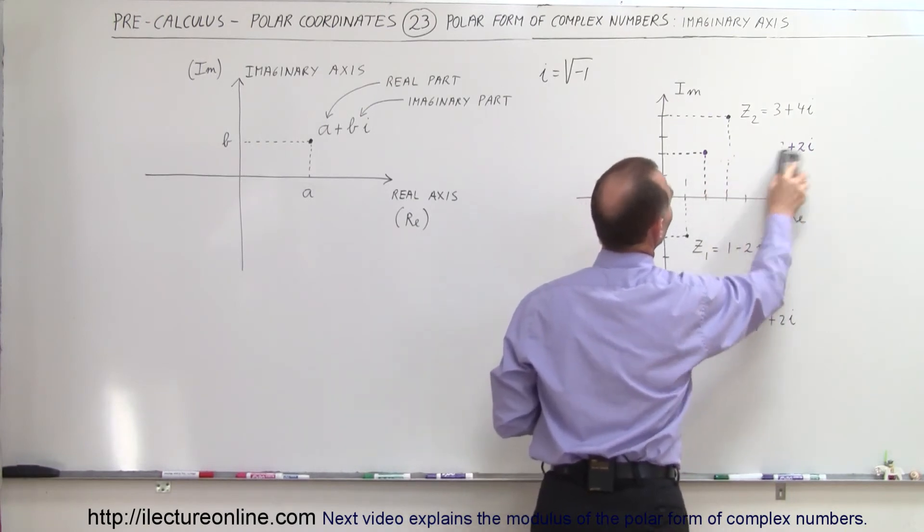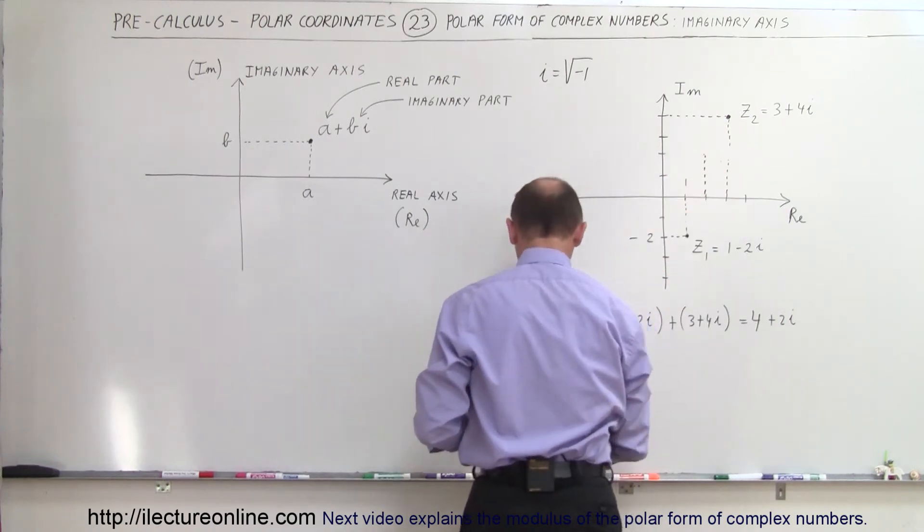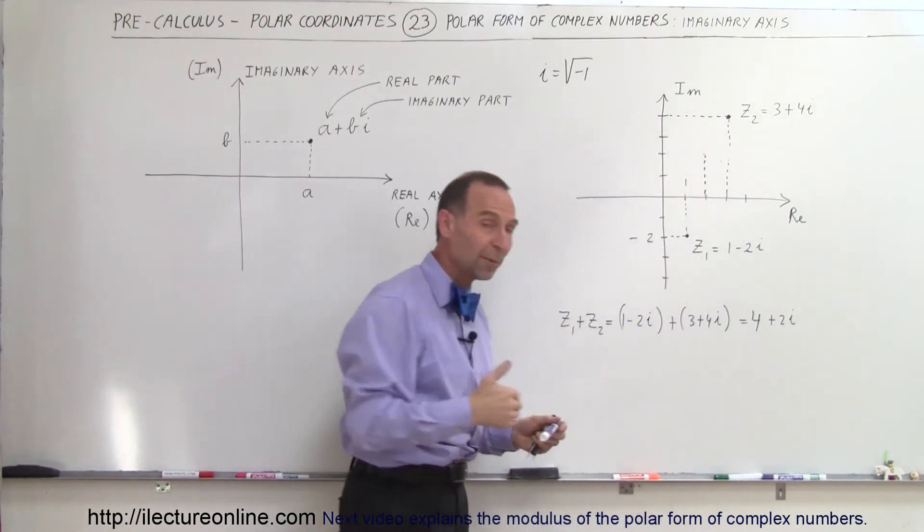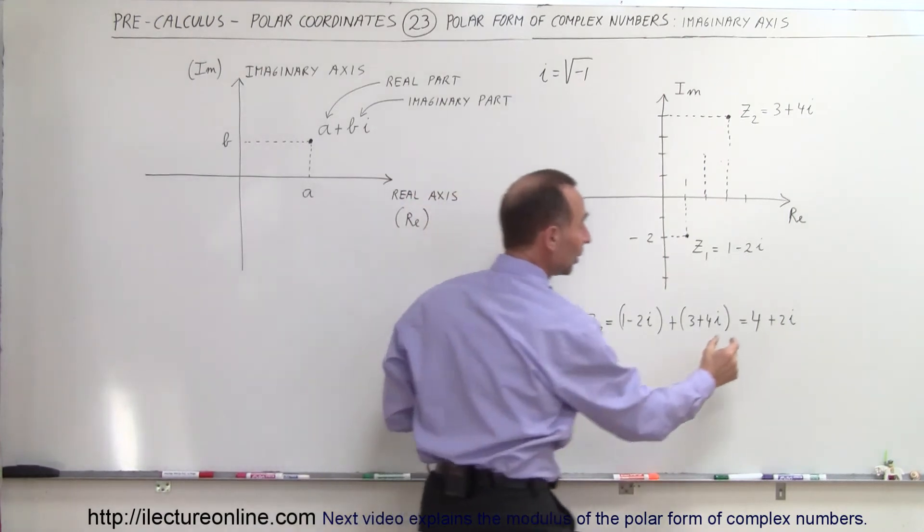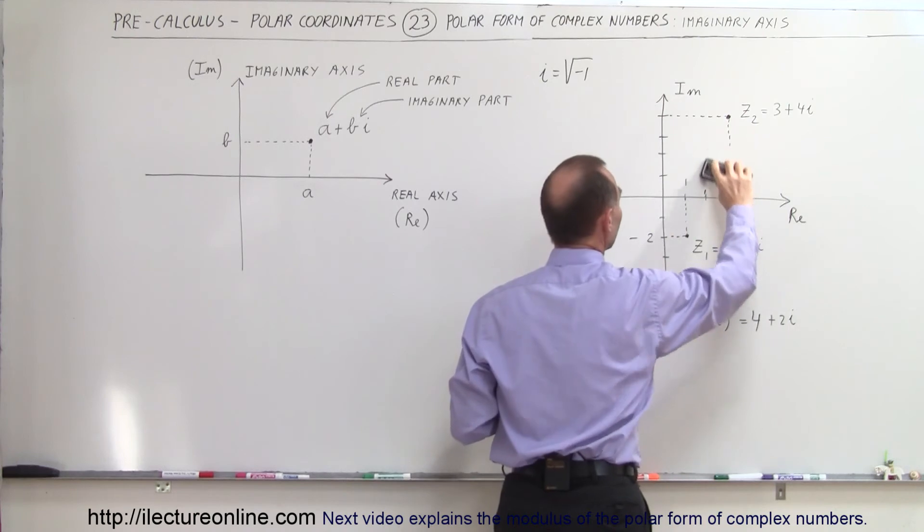So what does that look like on our graph? Well, it's not going to look like this. We're going to have to correct that. We're going to represent the sum of Z1 plus Z2. The real part would be equal to 4 and the imaginary part would be equal to 2i. So let's get rid of this here.